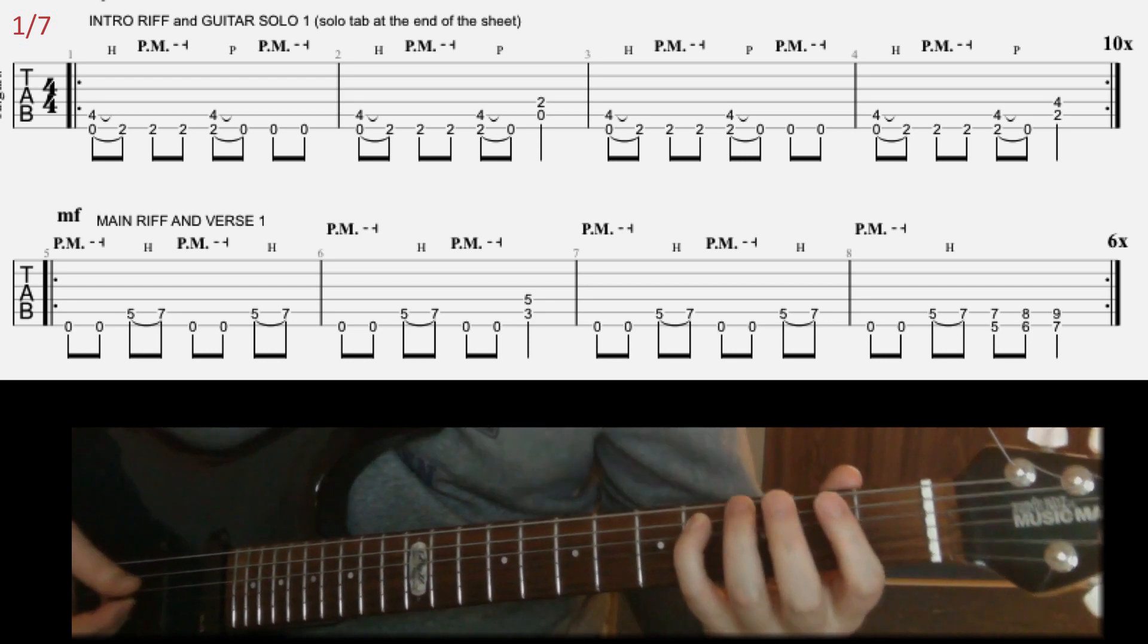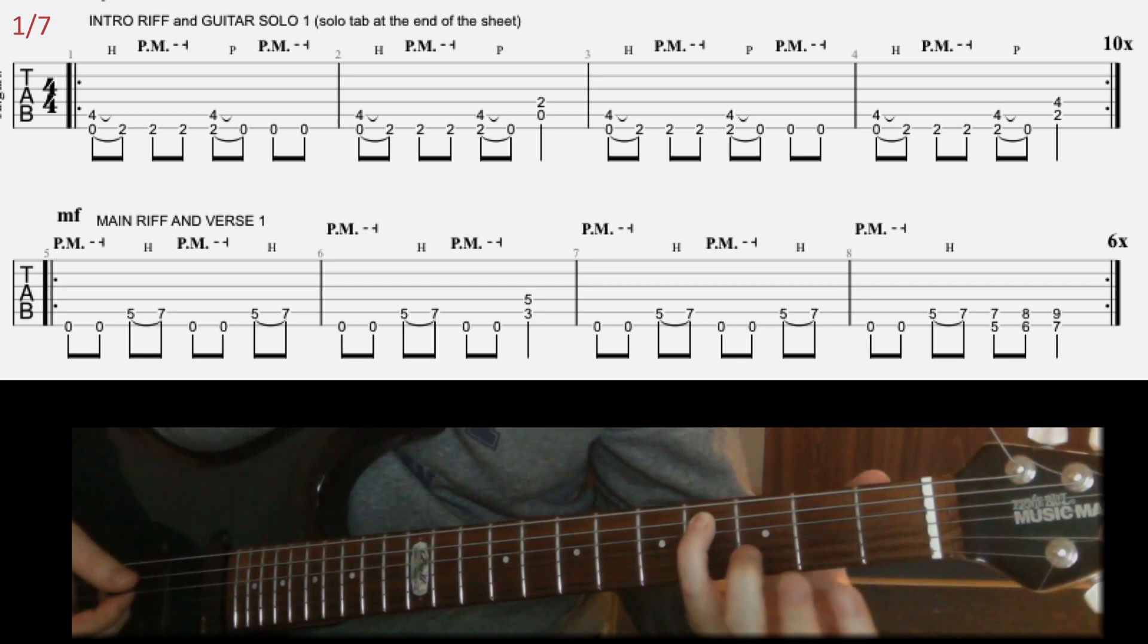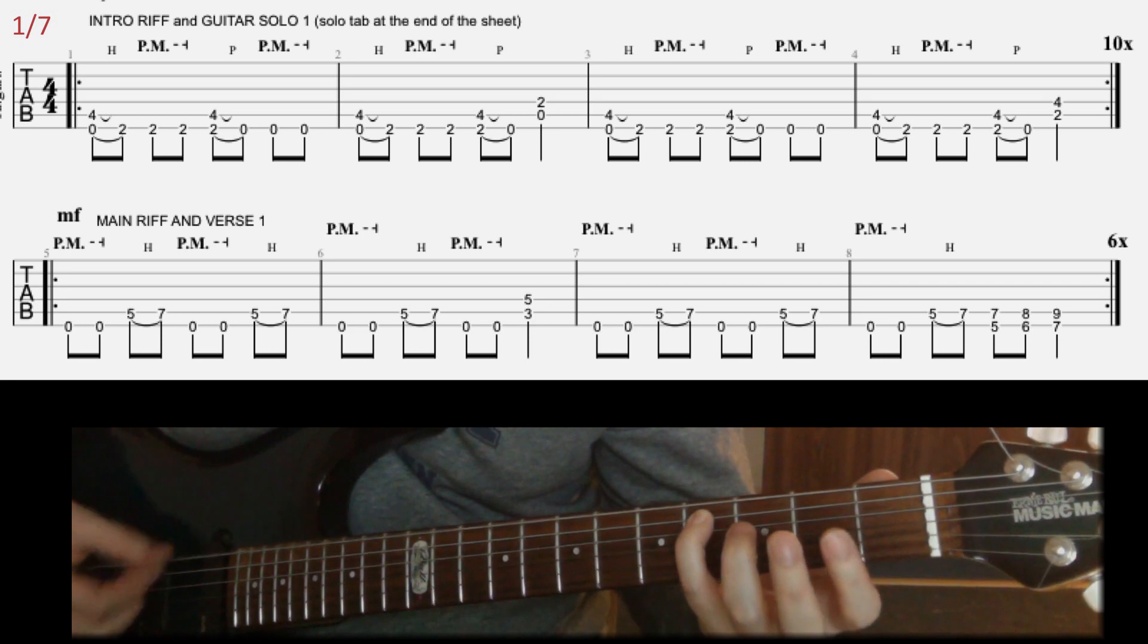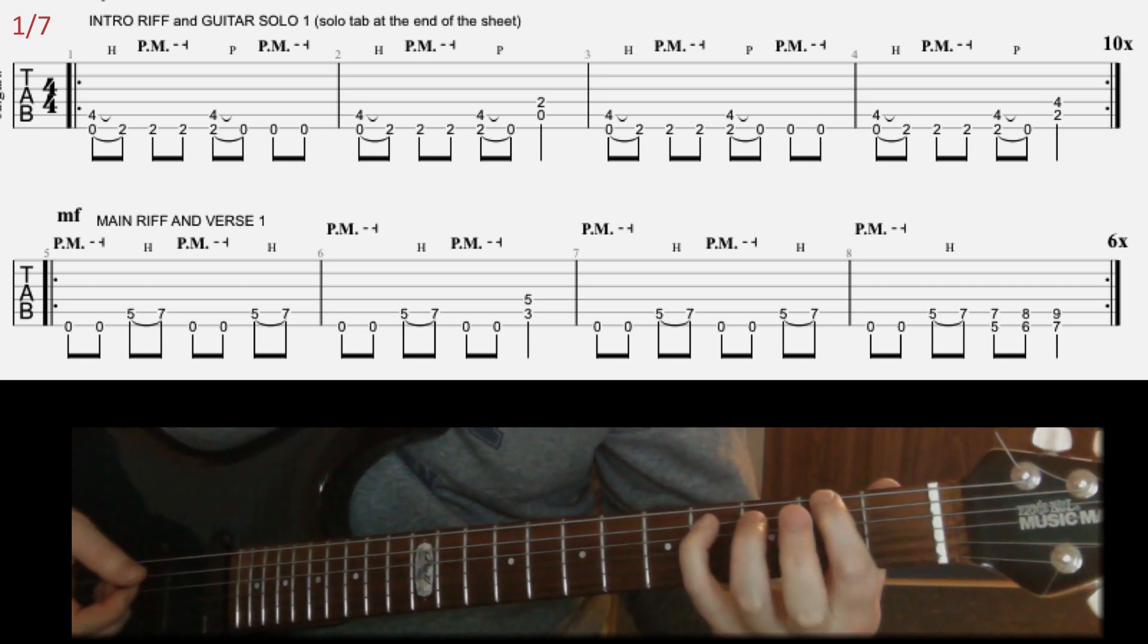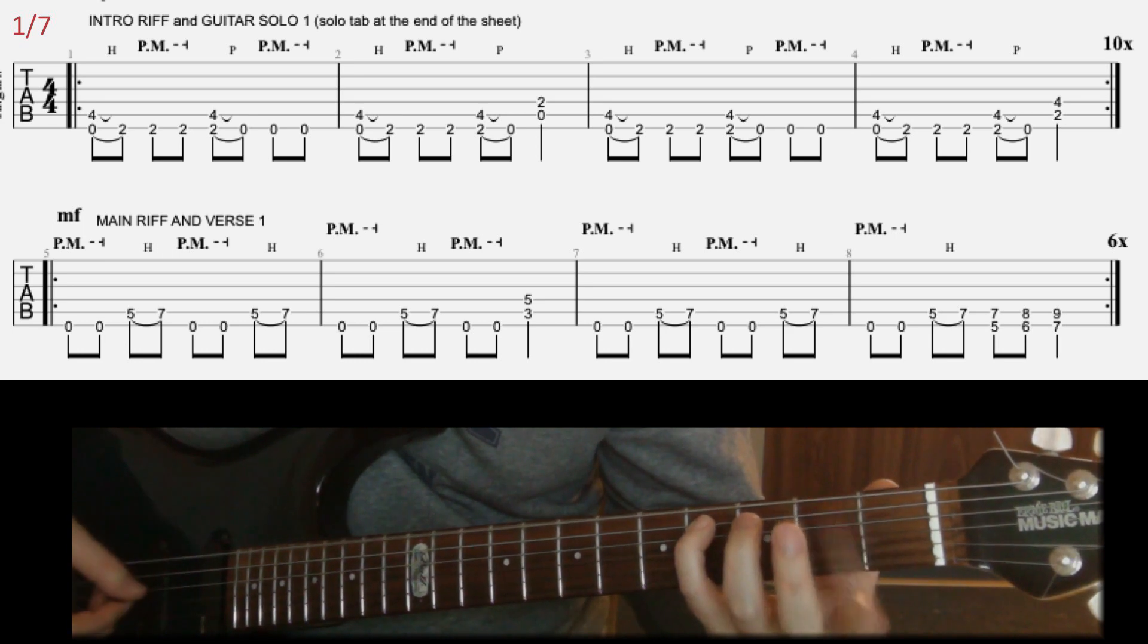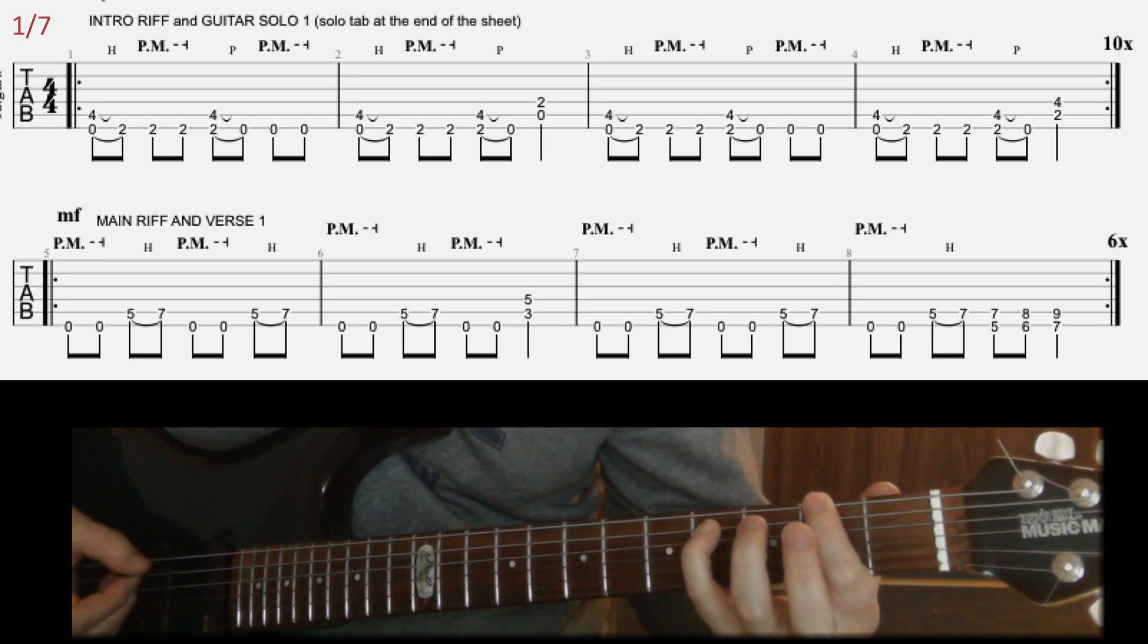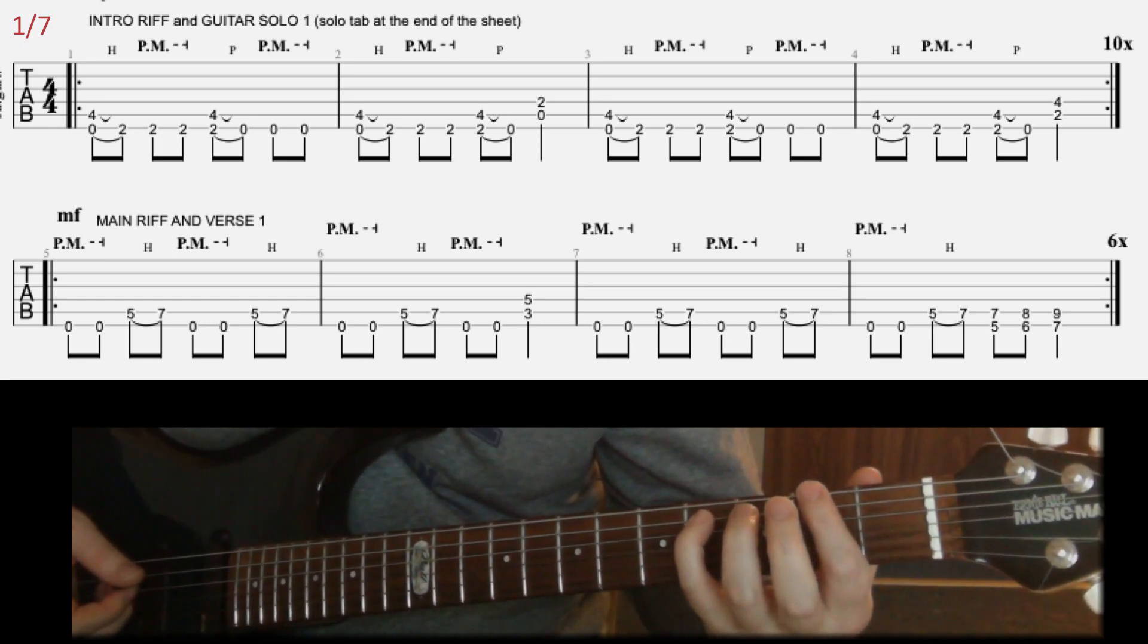So let's take a look at this riff. We're gonna start with putting our pinky on the fourth fret on A, and we're gonna play E and A strings together. And then you're gonna hammer on to the second fret on E. Like this, and then you're gonna play the second fret two more times, palm muted. That's the first four notes of the riff.